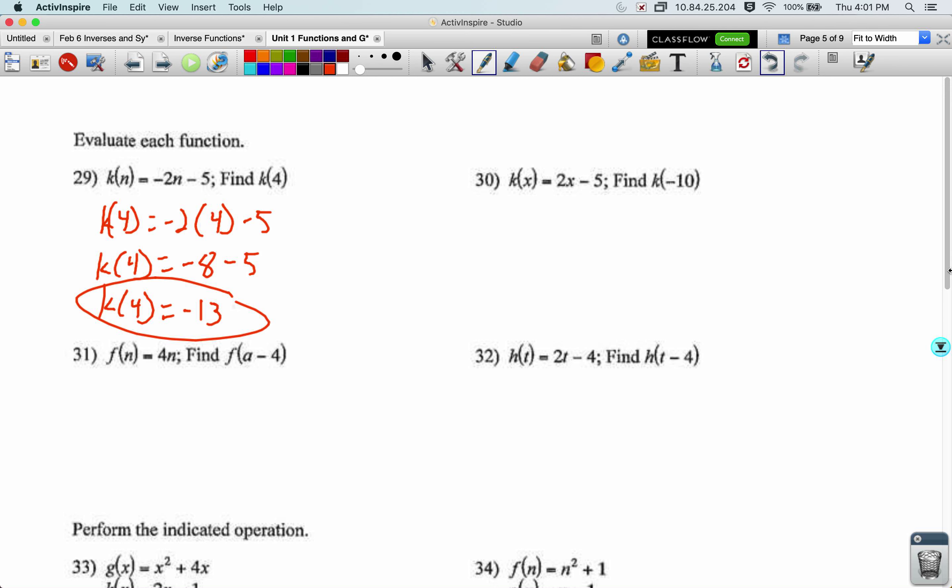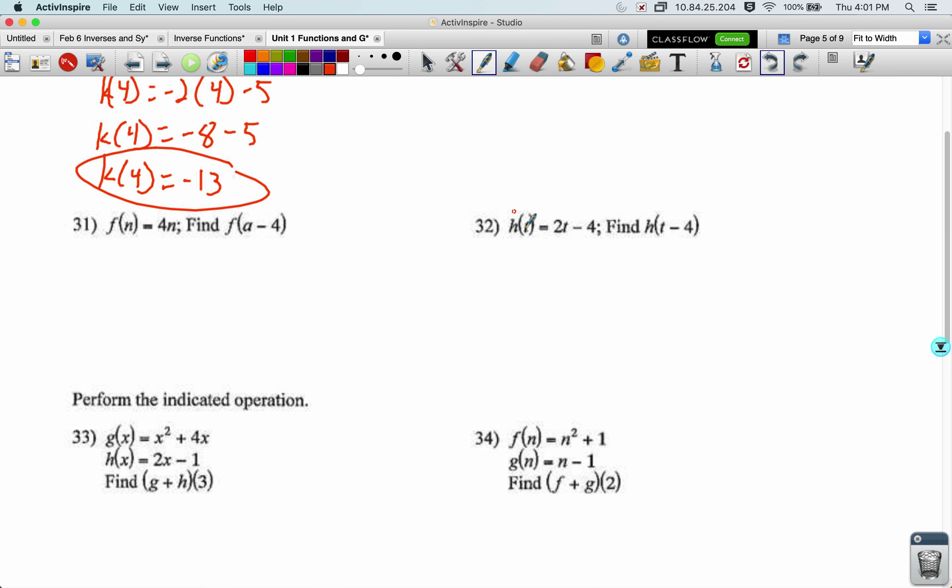Let's try plugging in an expression like in 32. So this used to take the input, double it, minus 4. Well, it still does that, but now the input has changed from t to t minus 4. So that t minus 4 is going to get plugged in right here. 2 times t minus 4 minus 4. 2t minus 8 minus 4. 2t minus 12. And then give it the power of keeping track of its input by writing it as h of t minus 4 equals 2t minus 12.